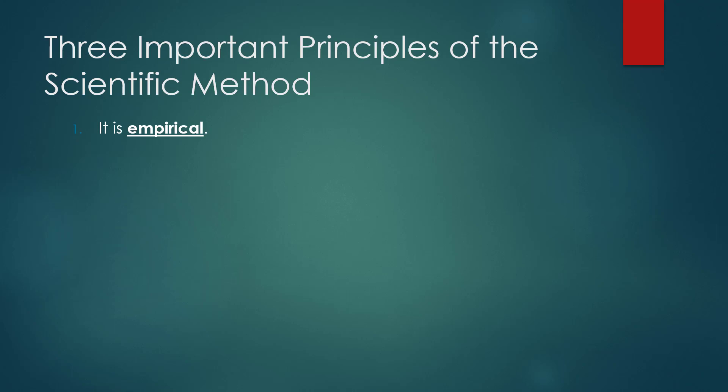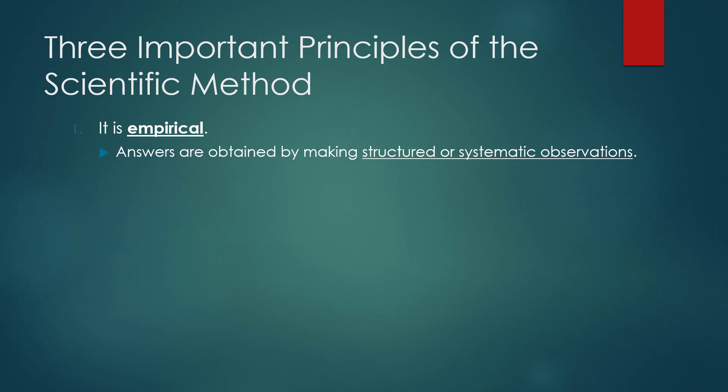The empirical method involves gathering information using the senses. Using that method alone isn't enough to make it scientific, but when we do things structured or systematically, we are making sure that the data we gather is empirical — meaning that it's based on, concerned with, and verified by observation and experience, rather than pure logic.